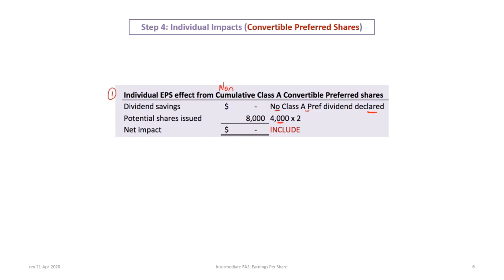The Class A preferred shares are convertible — each preferred share converts into two common shares. There are 4,000 preferred shares, each convertible into two common shares, resulting in 8,000 additional shares. The net impact per share is zero divided by 8,000, which equals zero. However, because it results in an increase in shares with no earnings impact, it is automatically dilutive.